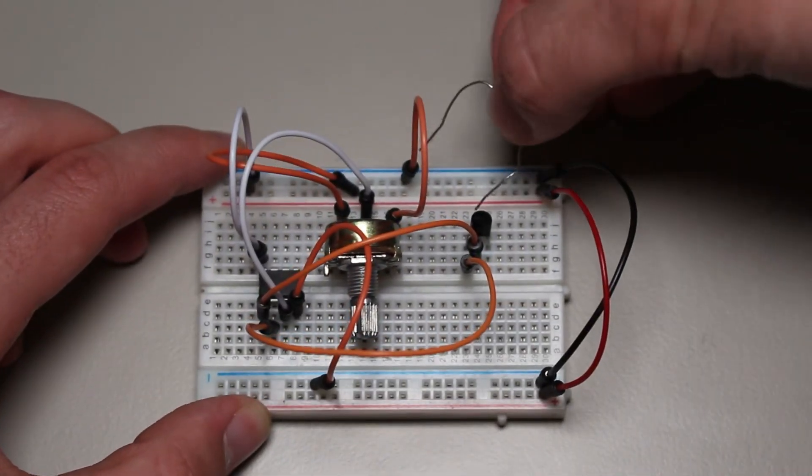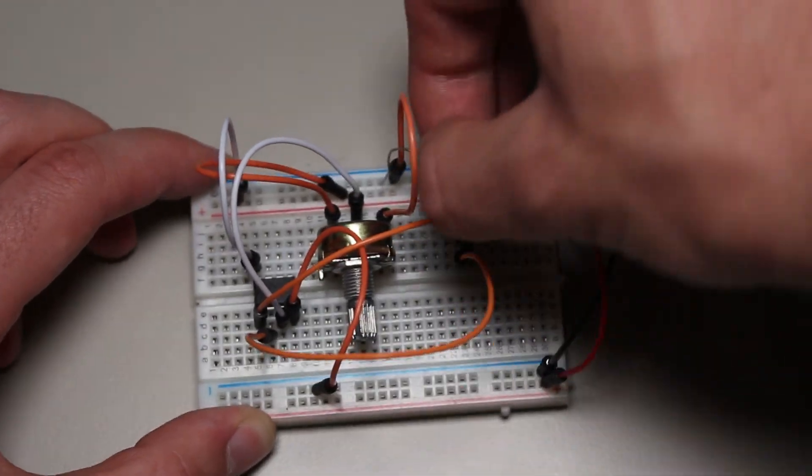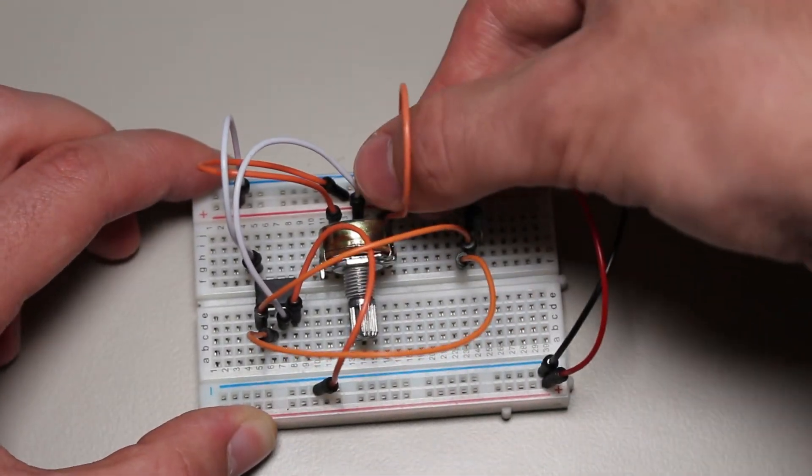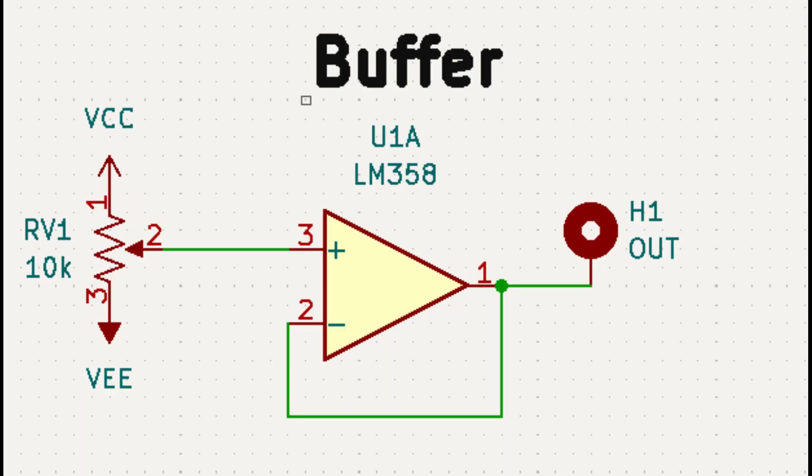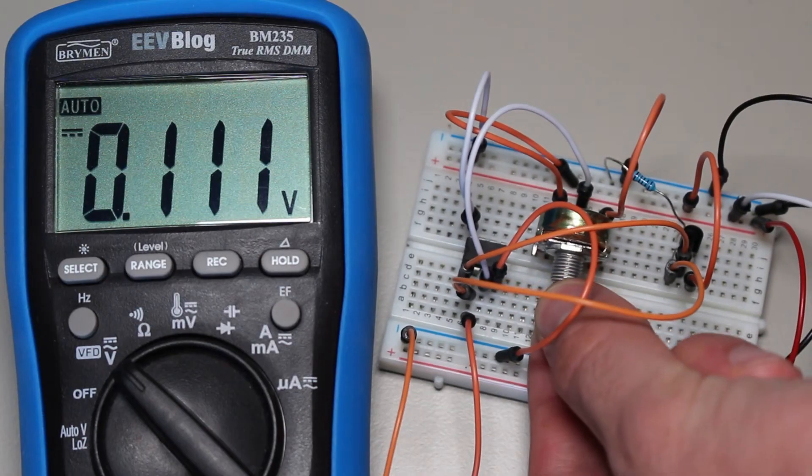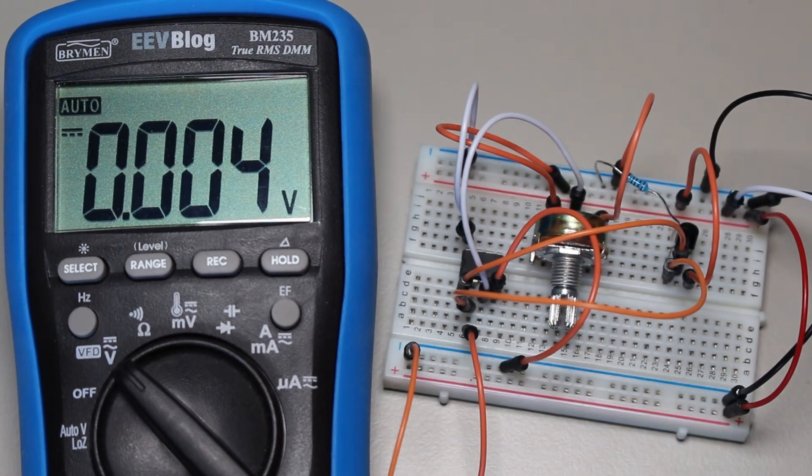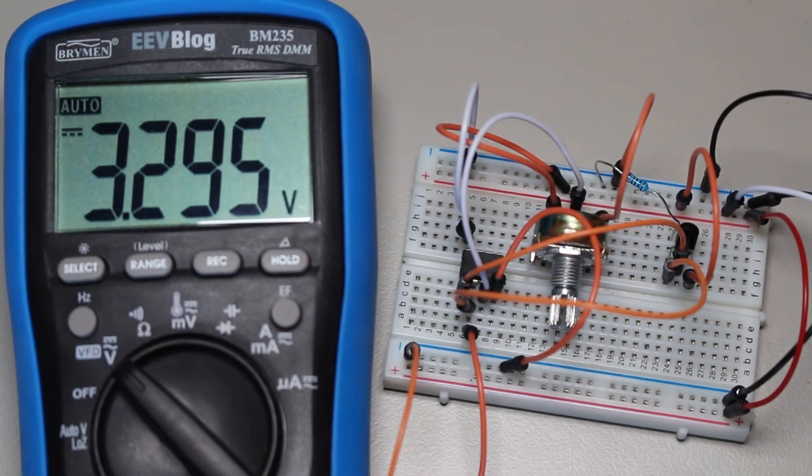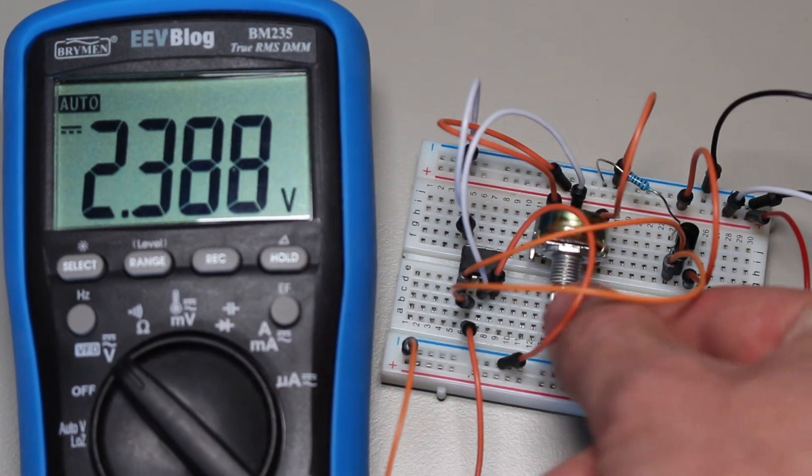Let's get into some more complicated circuits that use feedback. The simplest circuit using feedback is the buffer configuration. Simply connect the signal you want to replicate to the non-inverting input and connect the inverting and output pins together. Now the output will match the signal on the non-inverting input. Why would you want to do this?